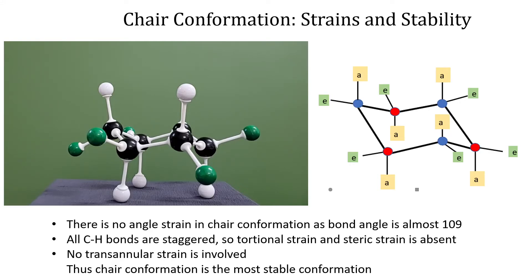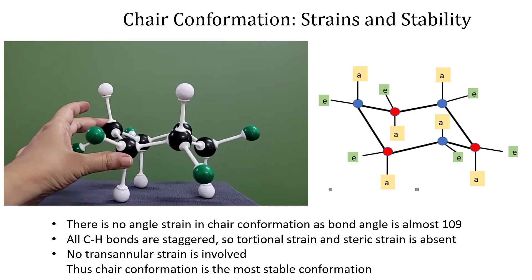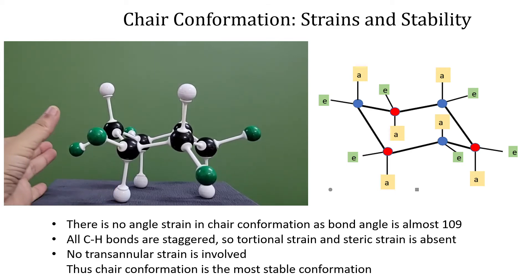Now we will discuss the strains in the chair conformation. The carbon-carbon bond angle is nearly equal to 109 degrees, so there is no angle strain. Looking at the hydrogens, the axial hydrogens adjacent to each other are staggered, and similarly the equatorial hydrogens are staggered — so all C-H bonds are staggered, meaning they are not facing each other. Therefore there is no torsional strain or steric strain, making the chair conformation the most stable conformation of cyclohexane.